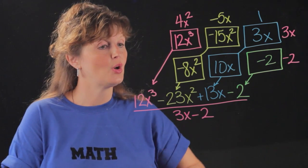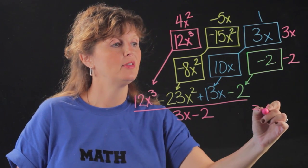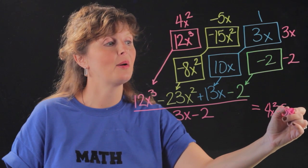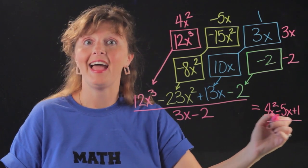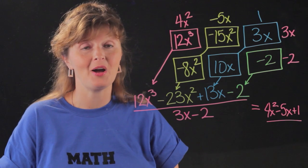So which means my answer to the whole problem is this piece across the top. 4x² - 5x + 1. And that's my answer. And that's how you divide polynomials using the box method.